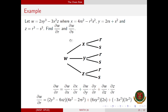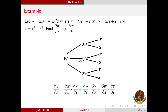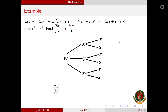Now let us find the partial derivative of w with respect to s. We again have three paths to take. For the first path: partial derivative of w with respect to x times the partial derivative of x with respect to s. Plus the partial derivative of w with respect to y times the partial derivative of y with respect to s. Plus the partial derivative of w with respect to z times the partial derivative of z with respect to s.